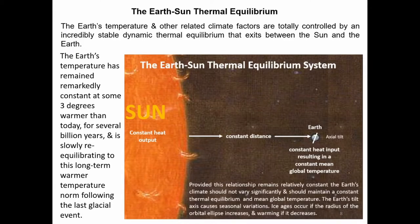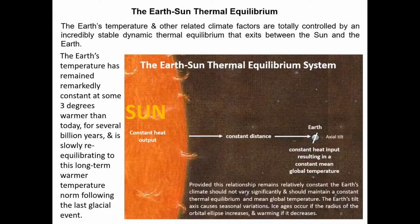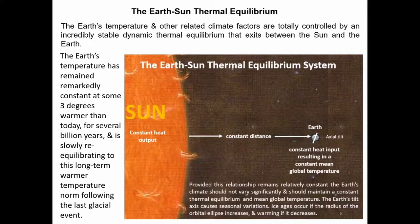The Earth-Sun thermal equilibrium. The Earth's temperature and other related climate factors are totally controlled by an incredibly stable dynamic thermal equilibrium that exists between the Sun and the Earth. The Earth's temperature has remained remarkably constant at some 3 degrees warmer than today for several billion years and is slowly re-equilibrating to this long-term warmer temperature norm following the last glacial event. The Earth's tilt axis causes seasonal variations. Ice ages occur if the radius of the orbital ellipse increases and warming if it decreases.